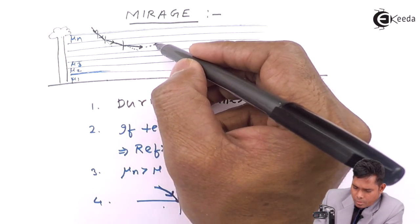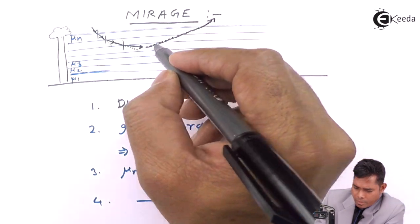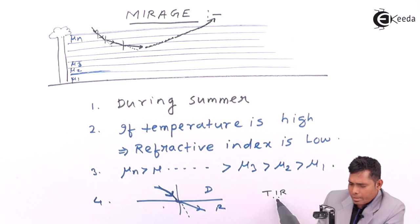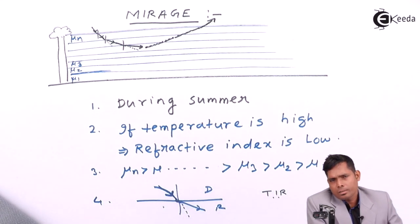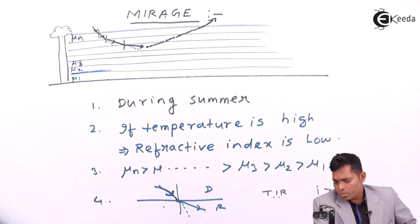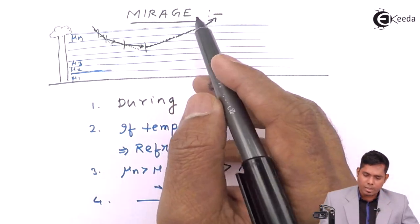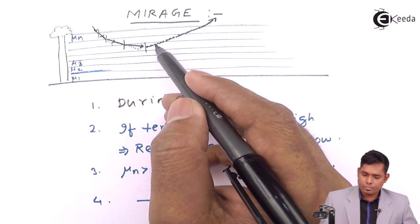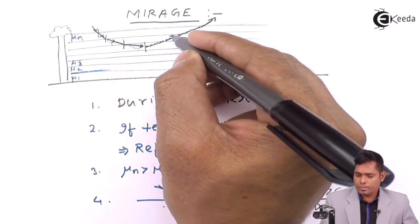Gradually the ray bends more and more, and a stage comes when total internal reflection occurs — when the angle of incidence at a particular interface is greater than the critical angle, because the layer of air below is a rarer medium and the ray is coming from a denser medium. This condition is met, so total internal reflection takes place and the ray is reflected back. As the reverse process happens, moving from rarer to denser, the ray bends towards the normal.